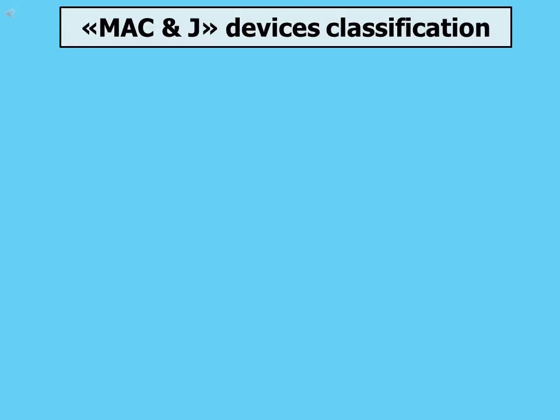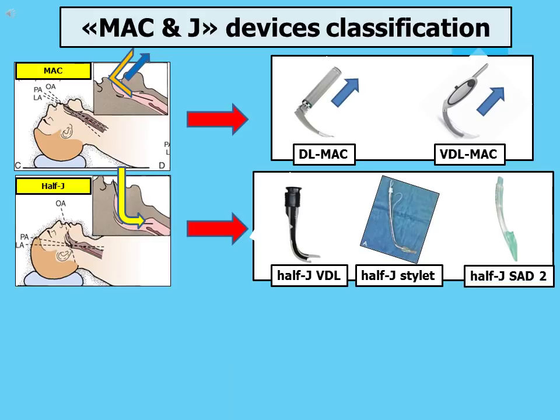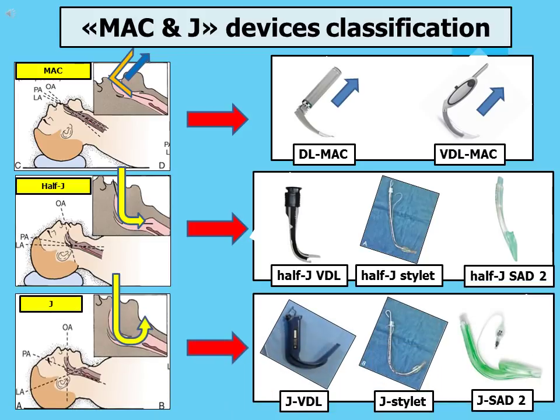As a consequence, the MAC and J model contains a classification of airway management devices that relates to the three possible patient positions: MAC position with MAC devices, half-J position with half-J devices, and J position with J devices.